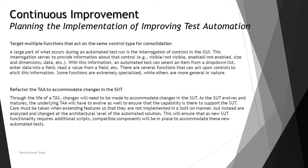The next factor is to refactor the TAA architecture design to accommodate changes in the SUT. It is crucial to identify areas of the test that will be able to accept changes over time. If incapable of adapting, it will become hard-coded and difficult to modify as the SUT changes. Through the life of a test, changes will need to be made as the SUT evolves and matures. The underlying TAA must evolve as well. Care must be taken so that new features are not implemented in a bolt-on manner but are instead analyzed and changed at the architectural level.